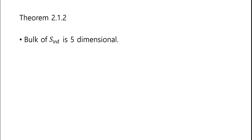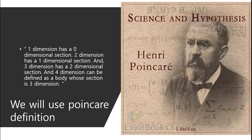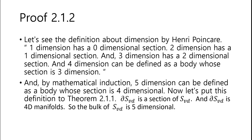In section 2.1.2, the bulk of SVD is 5-dimensional. We will use the Planckley definition. By the Anglin-Planckley definition: 1-dimension is a 0-dimensional section, 2-dimension is a 1-dimensional section, 3-dimension is a 2-dimensional section, and 4-dimension can be defined as a body whose section is 3-dimensional. By mathematical induction, 5-dimension can be defined as a body whose section is 4-dimensional. Now, applying this definition: DSVD is a section of SVD, and DSVD is a 4D manifold, so the bulk of SVD is 5-dimensional.